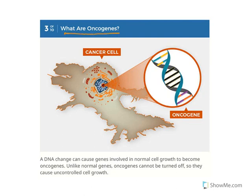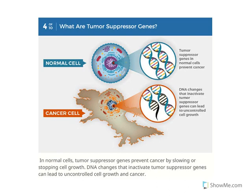A DNA change can cause genes involved in normal cell growth to become oncogenes, causing uncontrolled cell growth. Regarding tumor suppressor genes: in normal cells, tumor suppressor genes prevent cancer by slowing or stopping cell growth. Unfortunately in cancer, the tumor suppressor genes are inhibited, so they cannot stop the multiplication of cancerous cells.